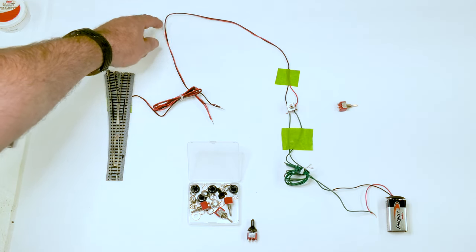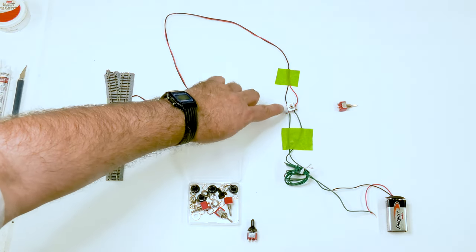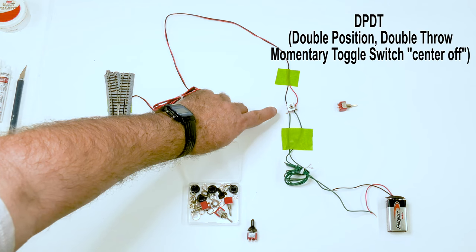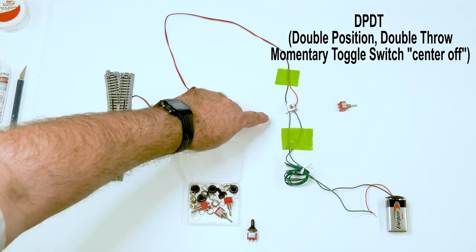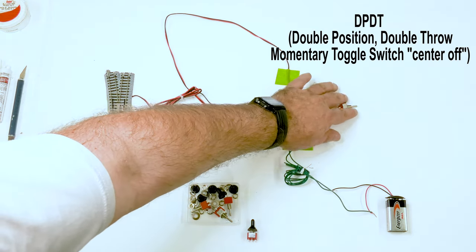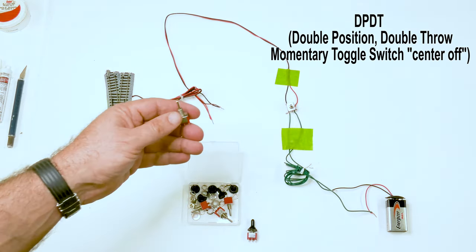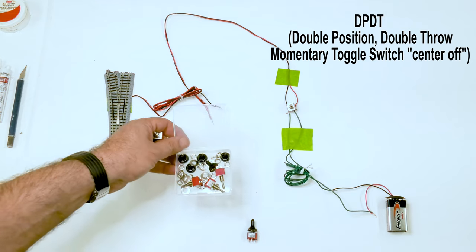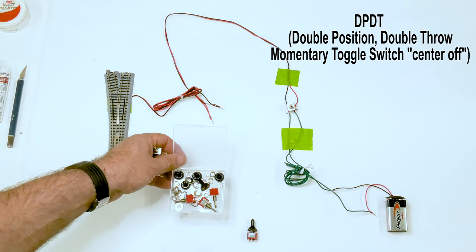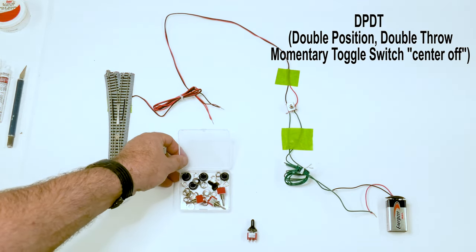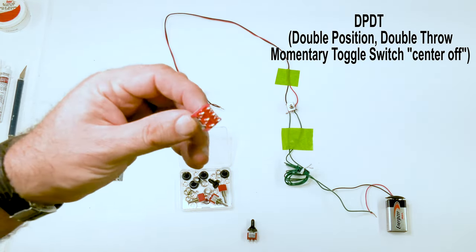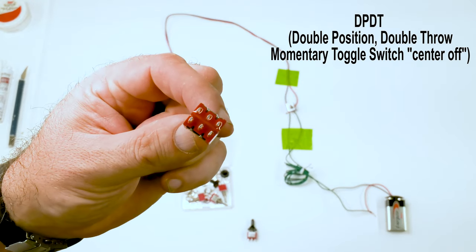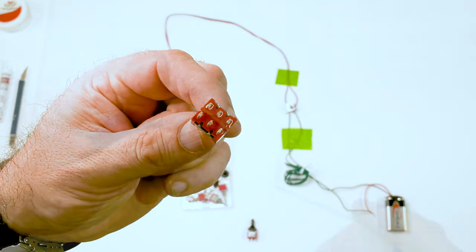We're going to follow the wire from the switch. It goes around to a double position, double throw momentary switch, and I'll show you more about that in a second. I got these off of Amazon, and you get six of them. They're tiny, but there are six posts.